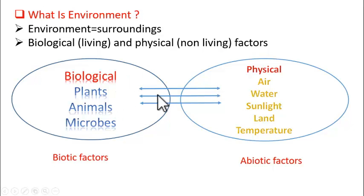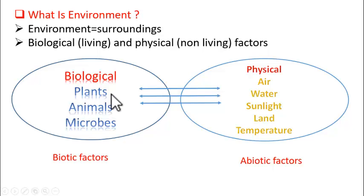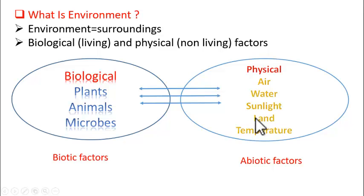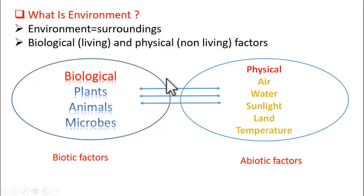If there is any imbalance or disturbance in any of the components of these factors, that will lead to imbalance in the environment. For instance, if plants are cut — that is deforestation, if forests are cleared — the carbon dioxide concentration in the air increases. That will lead to an increase in temperature, which changes the landforms and also affects animal life. Finally, the balance in the environment is lost. So, for the environment to stay stable, this interaction has to go on.